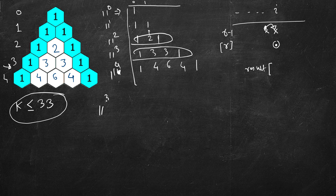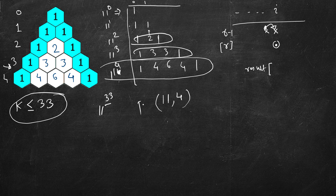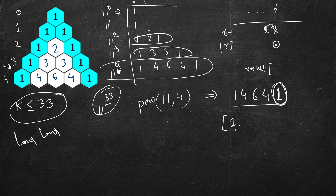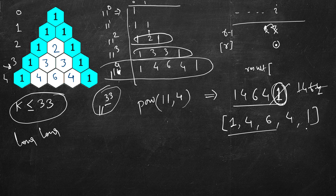If the row index were small — say less than 10 or 20 — you could calculate 11 to the power 4, which returns an int like 14641. Then you'd pluck out the last digit using modulo 10, put it in the vector, divide by 10, and repeat — modulo, divide, modulo, divide. This is a cool trick if the row index is within bounds.